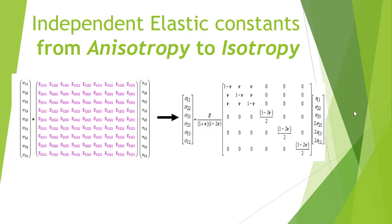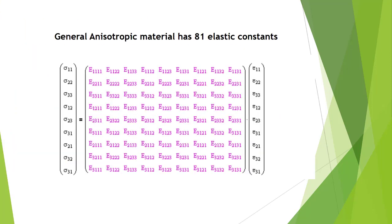So let's start our class. Here we can see that generally anisotropic material has 81 elastic constants.